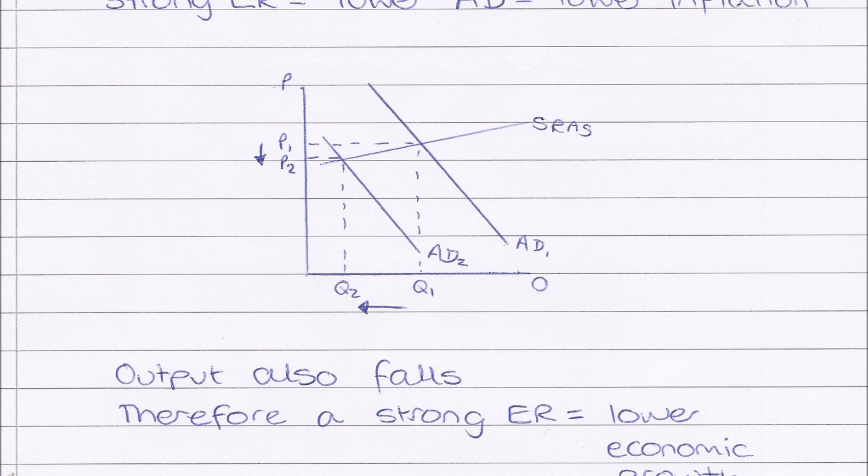So how does our exchange rate actually impact those economic aims? If we have a strong exchange rate, there will be lower aggregate demand, which means our aggregate demand curve will shift left. Due to this, our equilibrium price decreases from P1 to P2. The price level has fallen, so there is lower inflation because inflation is a sustained rise in price level.